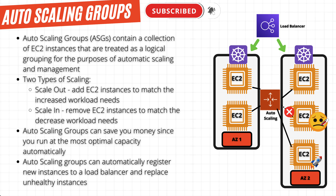We have already talked about how elastic AWS is, meaning we can launch and delete instances whenever we need to. Auto-scaling groups build on this idea by adding instances when the workload demands it, otherwise referred to as scaling out, or by removing instances when the workload no longer requires them, otherwise referred to as scaling in. This helps ensure we have the optimal amount of instances for our workload at all times.